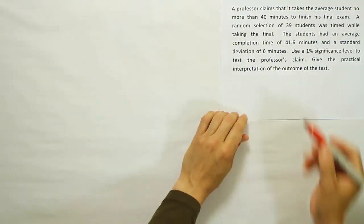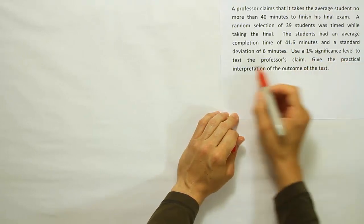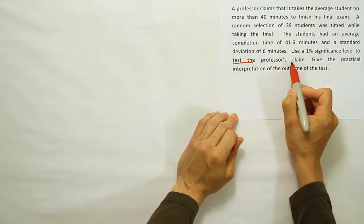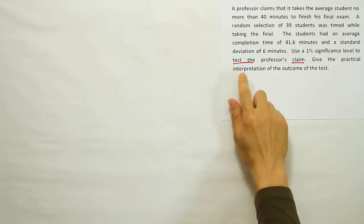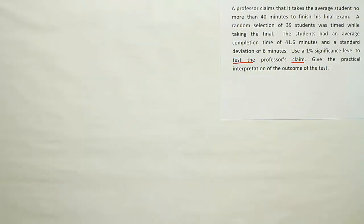So here it says use a 1% significance level to test the professor's claim. That's pretty clear that we're doing a hypothesis test. When it says test the claim, we're doing a hypothesis test. So once you know it's a hypothesis test, the next thing you have to do is to identify the claim symbolically.